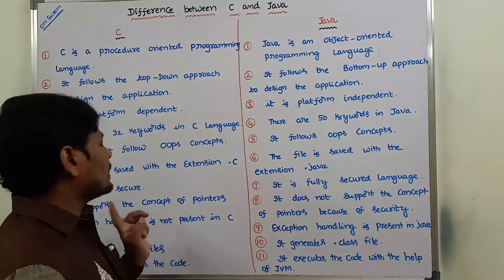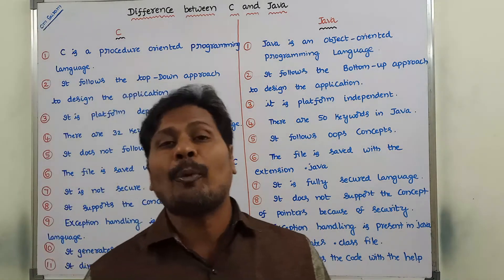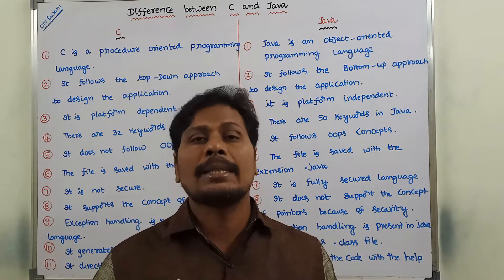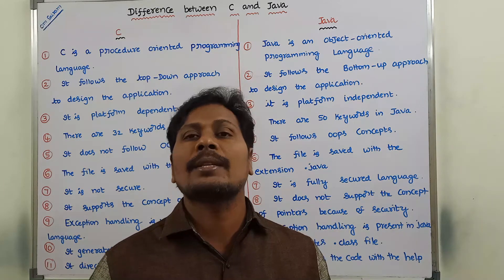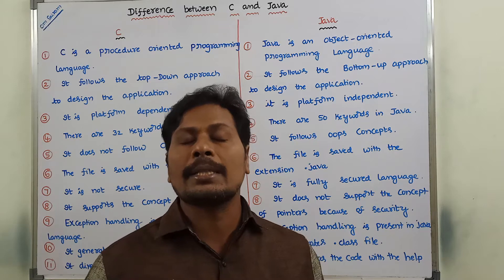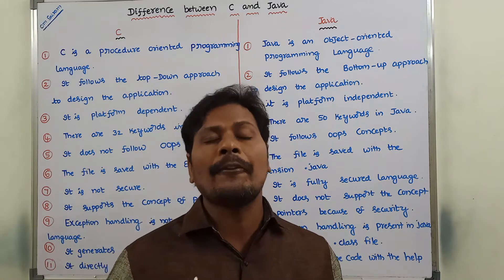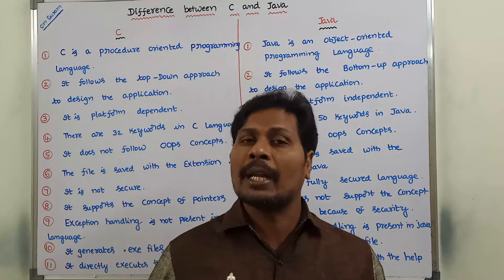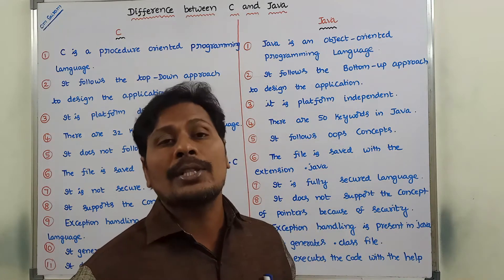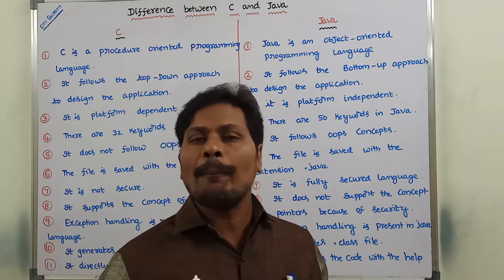Next point: C supports the concept of pointers. We already know that C language supports pointers — a pointer is a variable that contains the address of another variable. Whereas in the case of Java, Java does not support pointers.